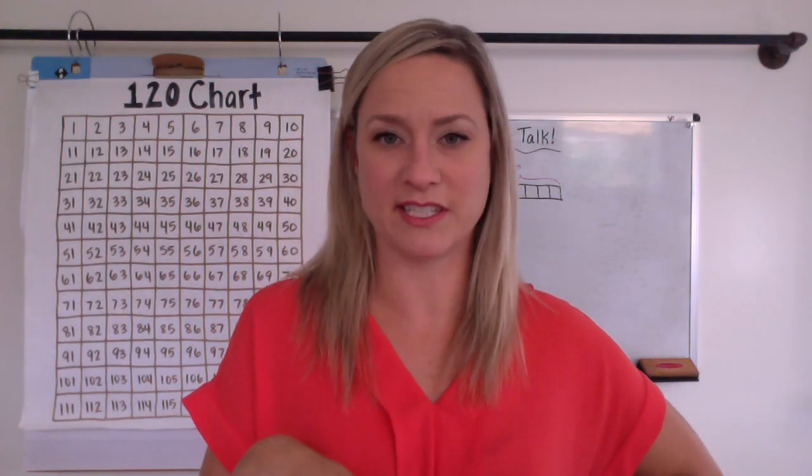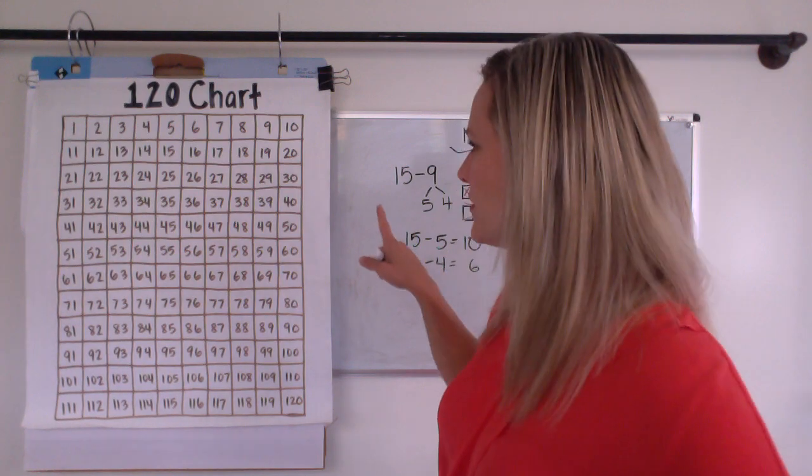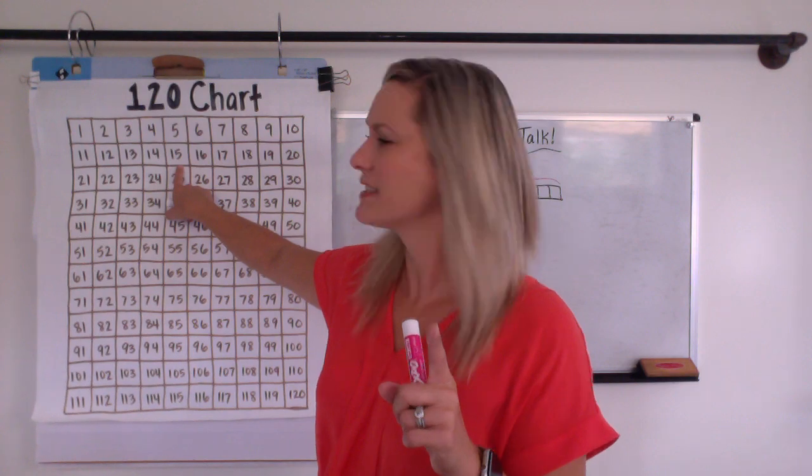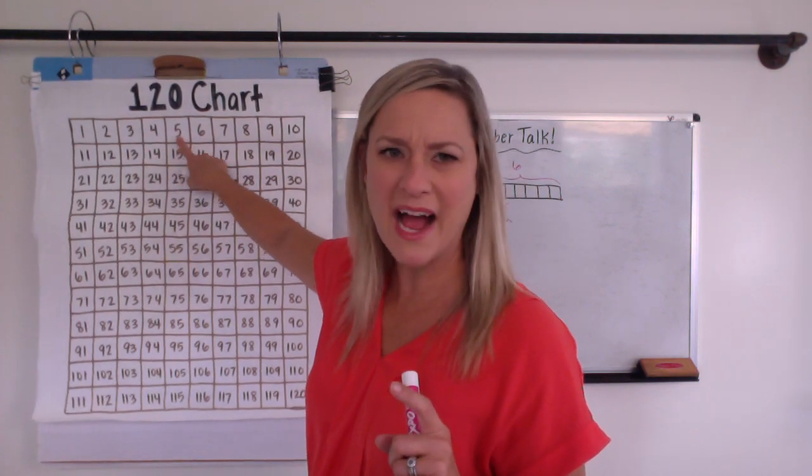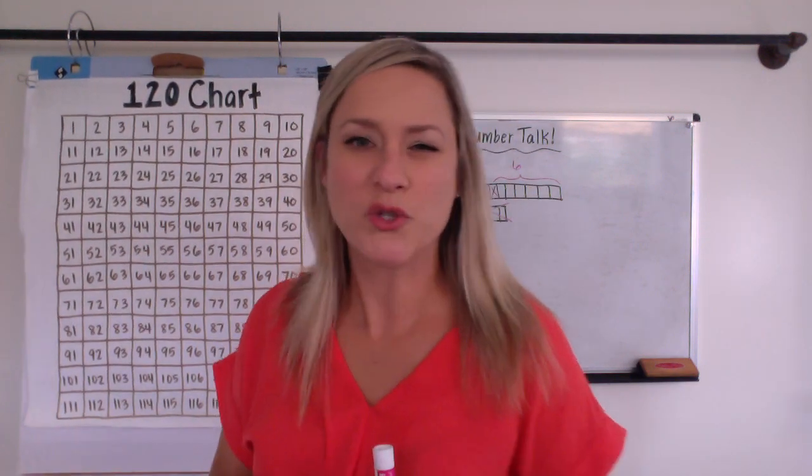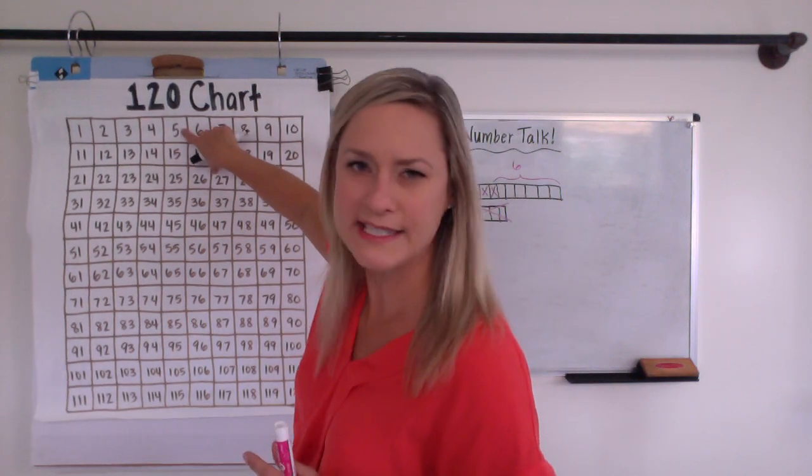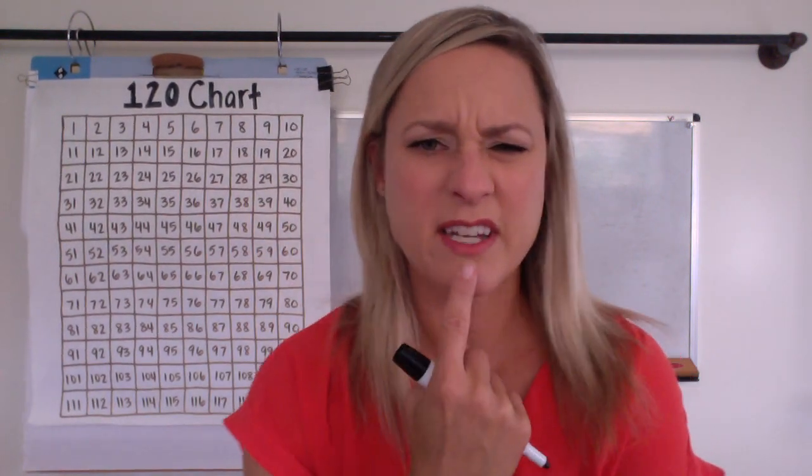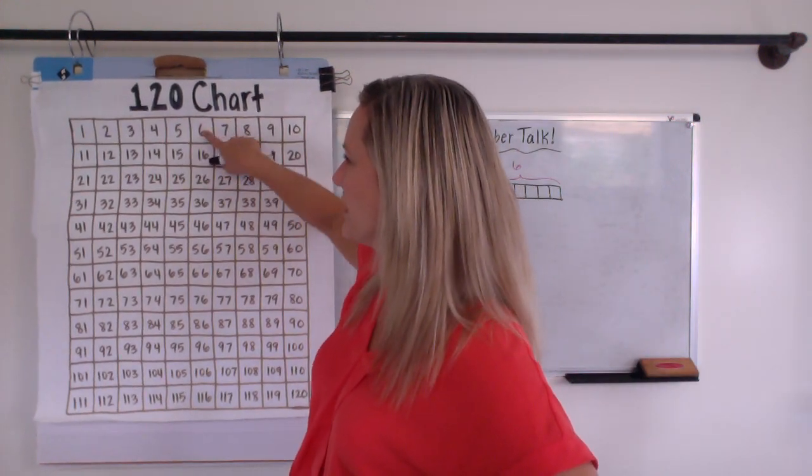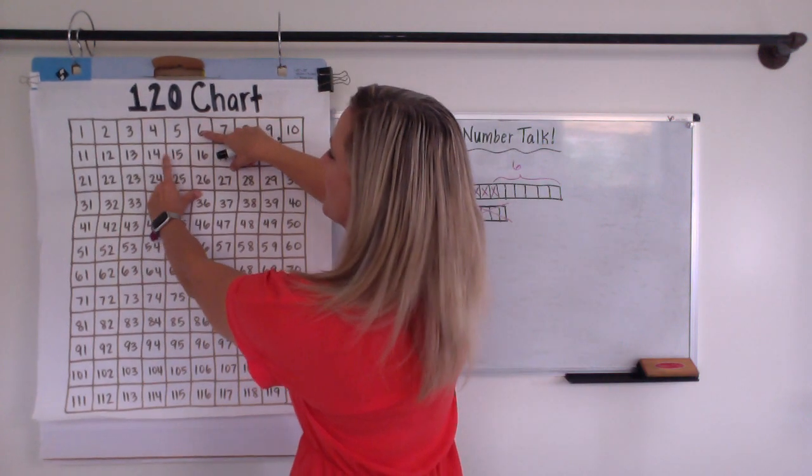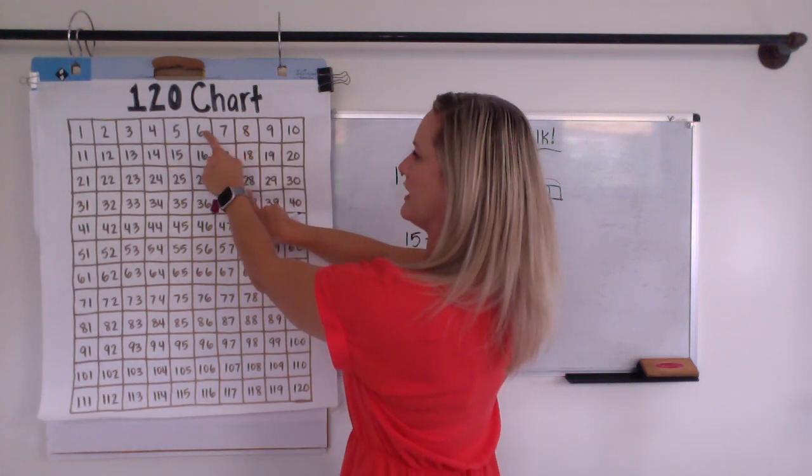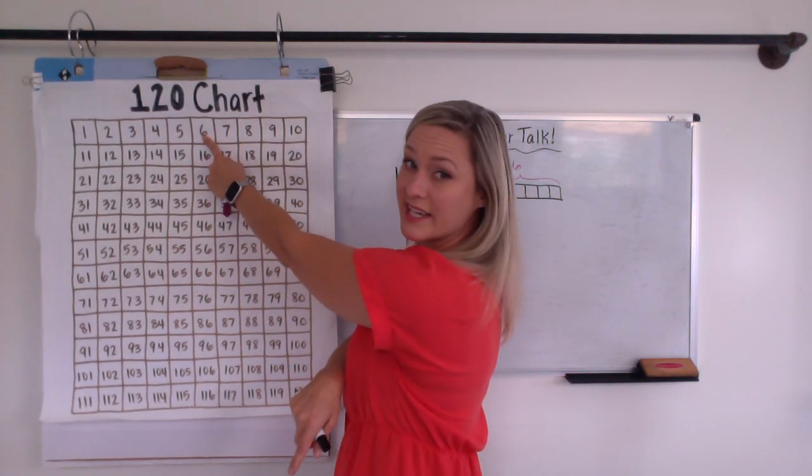How about on the 120 chart? Did anyone use that? So maybe you did. You started at 15. And I have a guess. Some of you probably knew that if you hopped back one whole row, that you would be taking off 10. But did we have to take off 10? We had to take off 9. So maybe you hopped back one whole row and then just went one less than that. So then we would have taken off 1, 2, 3, 4, 5, 6, 7, 8, 9 would be our answer right there if we took off 9.